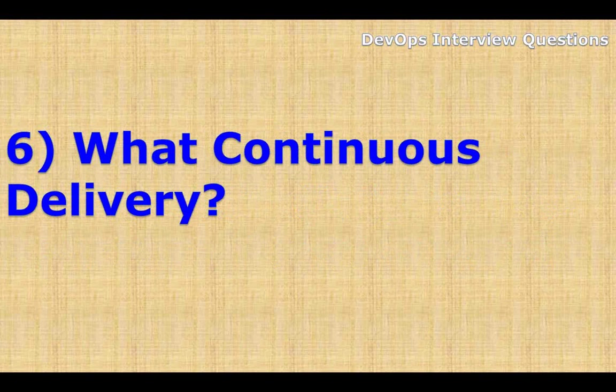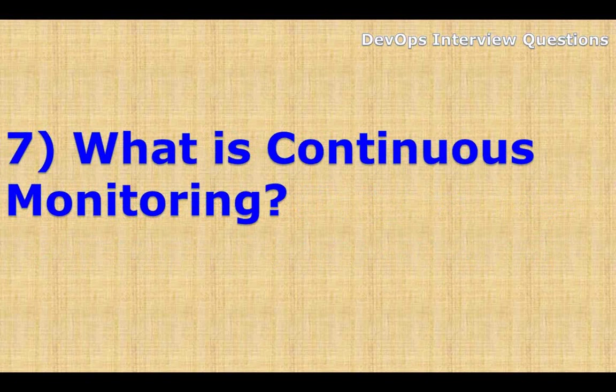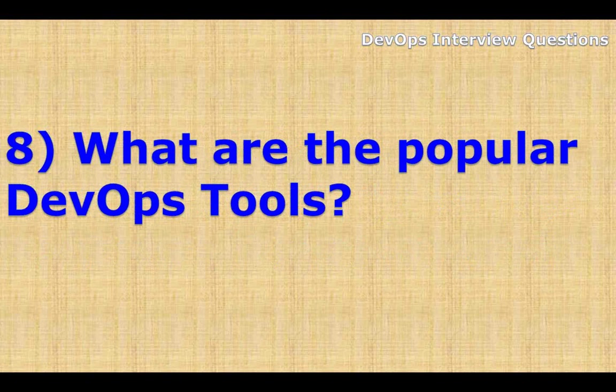Next: what is continuous delivery? Continuous delivery is an extension of continuous integration which primarily helps to get the features that developers are developing out to the end users as soon as possible. During this process it goes through various stages of QA, staging, etc., and then for delivery to the production system. Next: what is continuous monitoring? As the application is deployed, we need to monitor its performance. Monitoring is also very important as it might help to uncover defects which might not have been detected earlier.